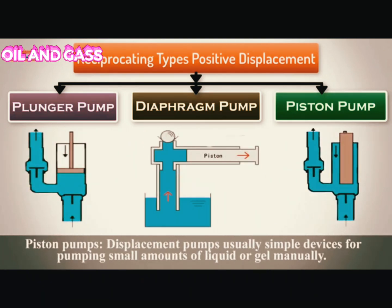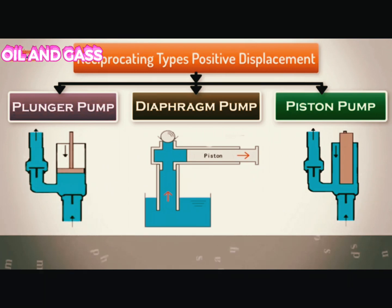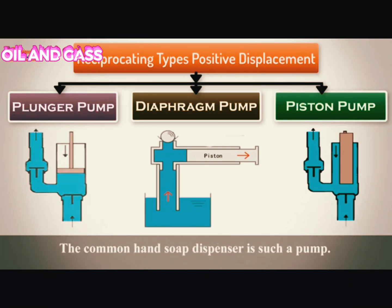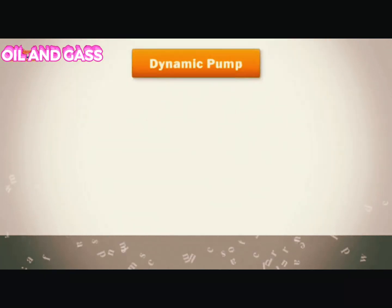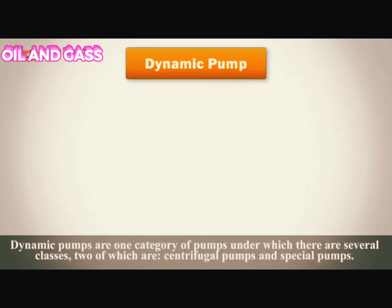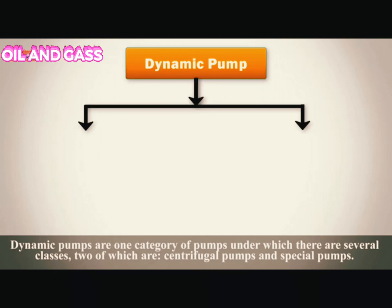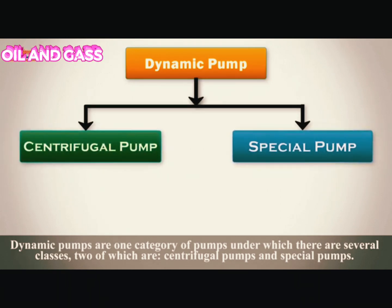Piston pumps are displacement pumps usually used as simple devices for pumping small amounts of liquid or gel manually — the common hand soap dispenser is such a pump. Dynamic pumps are one category of pumps under which there are several classes, two of which are centrifugal pumps and special pumps.